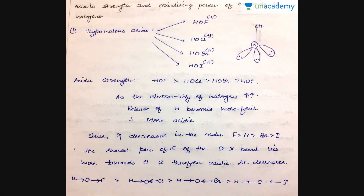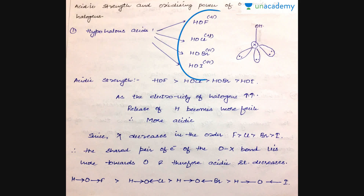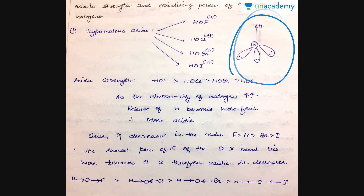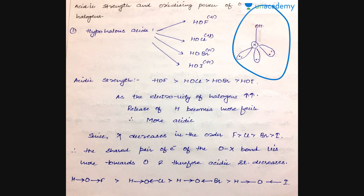The first category is hypo halous acids. Since fluorine forms this series, there are four acids in this category: HOF (hypofluorous acid), hypochlorous acid, hypobromous acid, and hypoiodous acid. The structure shows the halogen atom attached to one OH group. Though it has a linear shape, it is arranged in a tetrahedral fashion where the halogen atom is surrounded by three lone pairs and one bonding pair of electrons.